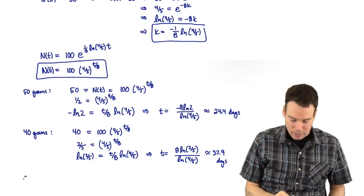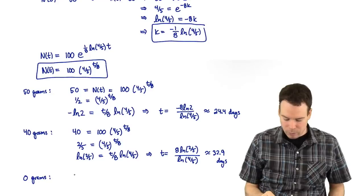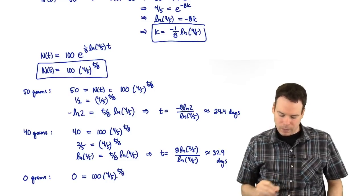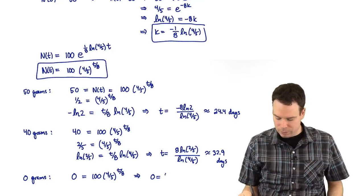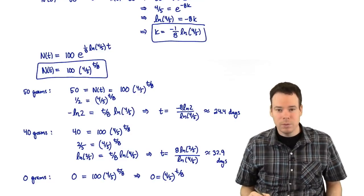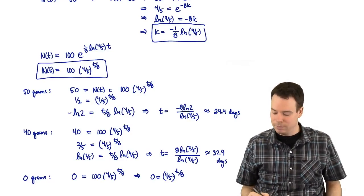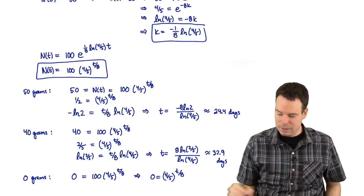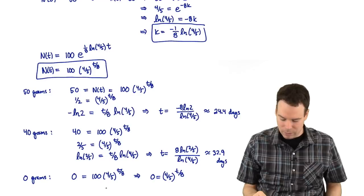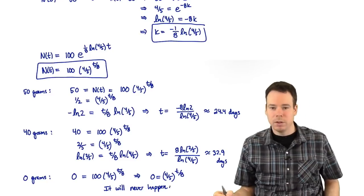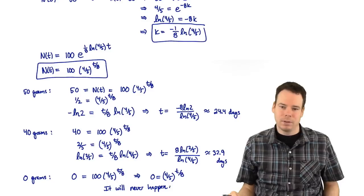What's the last question — when do we get 0 grams? We'd like to know when 0 = 100·(4/5)^(t/8), or equivalently when 0 = (4/5)^(t/8). Is there a value of t that solves this? No, there isn't. There is no time value for which (4/5)^(t/8) = 0. That means it never happens — there is never 0 grams of this radioactive material. It'll decay and decay and decay, but there's always something left.